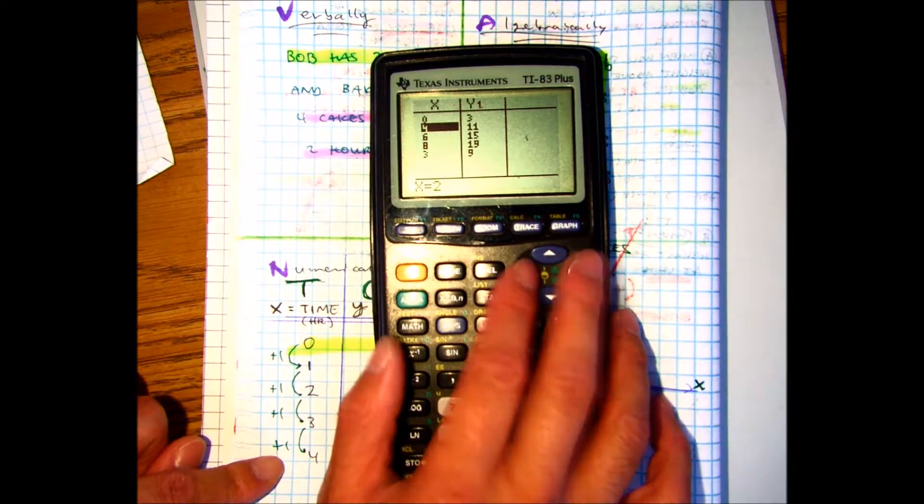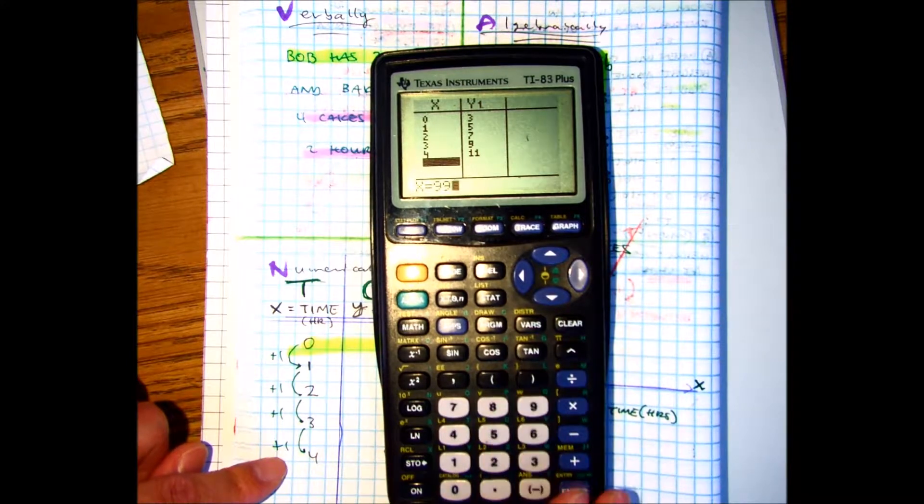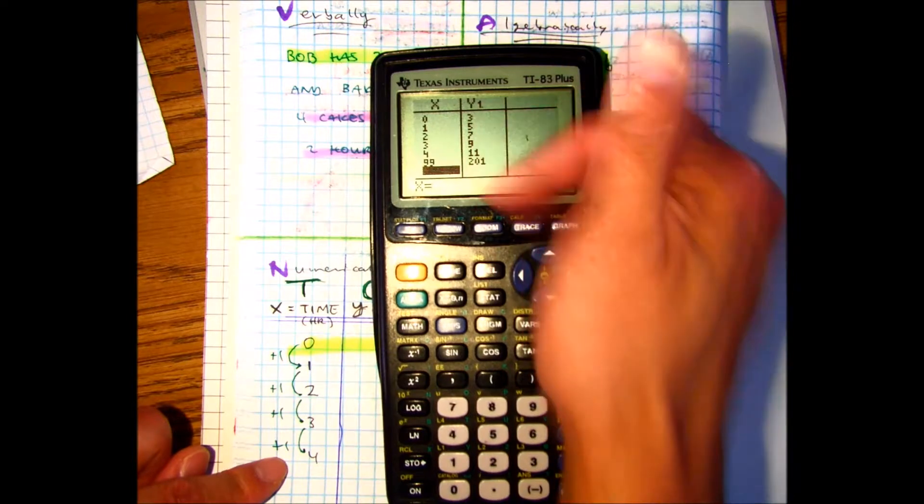It's not a one. One, enter, two, enter, three, enter, four, enter. Ninety-nine hours. Does that make sense? And I can quickly get an answer.